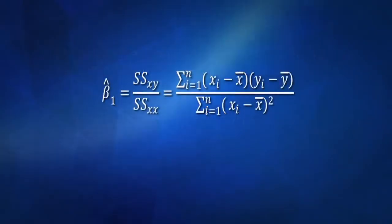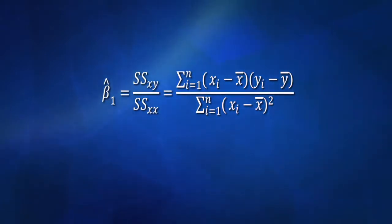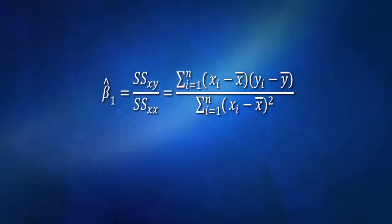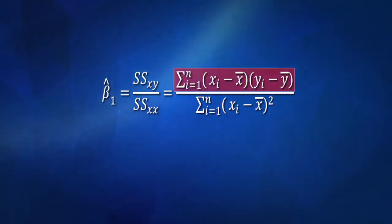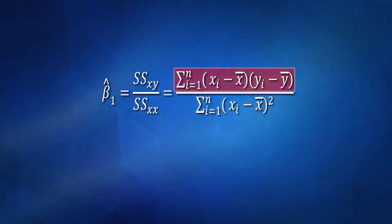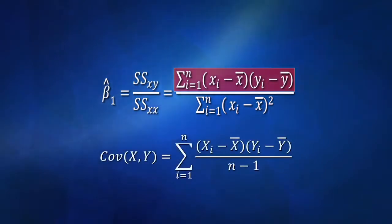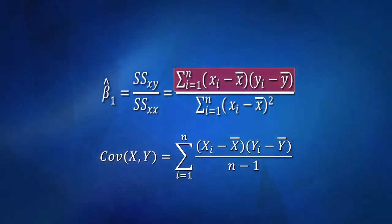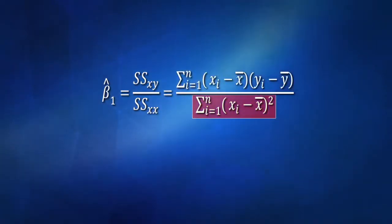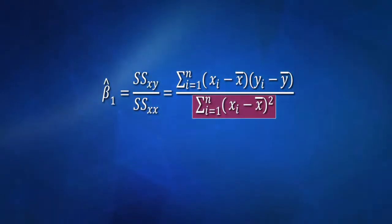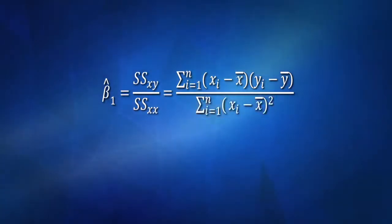Here's how we estimate β̂₁ — it's equal to the ratio of the sum of squares of xy over the sum of squares of x. The numerator is the sum from i=1 to n of (xᵢ − x̄)(yᵢ − ȳ) — this is the same as the numerator when we calculate the covariance between x and y, so it measures the variability between x and y. The denominator is the sum of squares x: the sum from i=1 to n of (xᵢ − x̄)², which is a measure of the variability in x. That's what we use to estimate β₁.